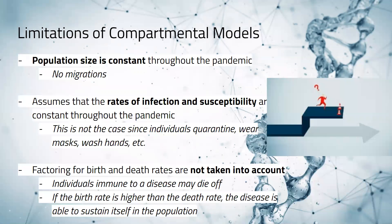Now I will pass it on to Minjiri. Some limitations of the compartmental model are that the population size has to remain constant, or else this model would not work theoretically. That would mean that throughout a pandemic, no migrations would happen within the populations. It would also assume that the rates of infection and susceptibility are constant throughout the pandemic, which is not the case since people can take measures such as wearing masks or gloves or proper hygienic measures to stop the spread of infection. Another limitation is that the model does not factor in birth or death rates — individuals immune to a disease may die off, and if the birth rate is higher than the death rate, the disease is able to sustain itself in the population.